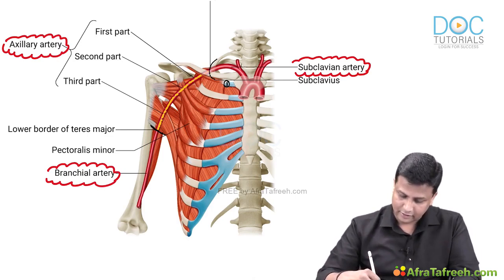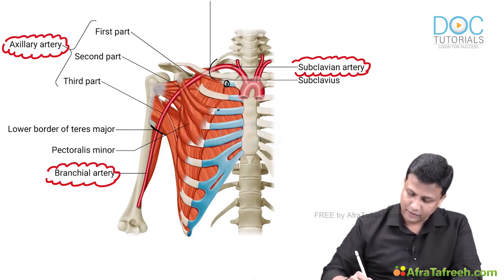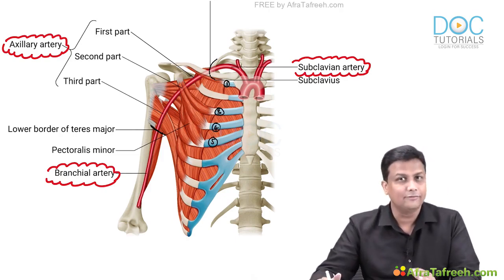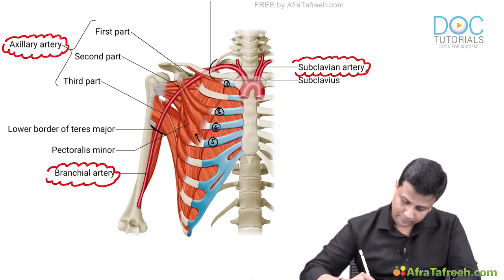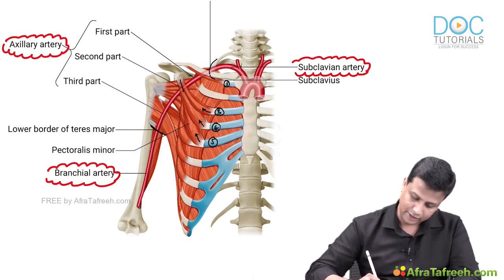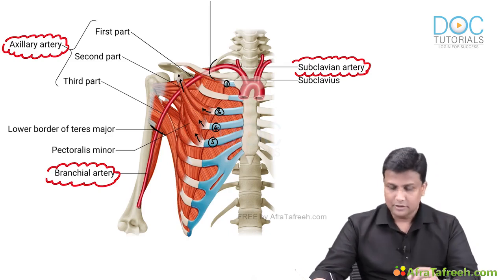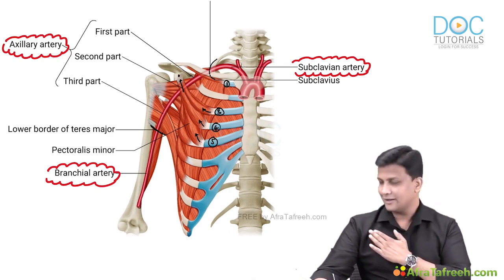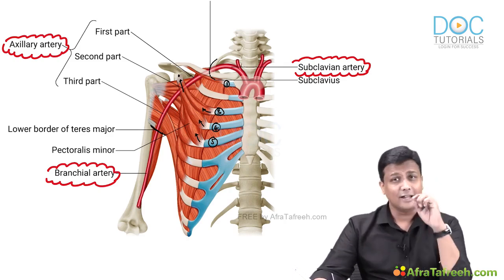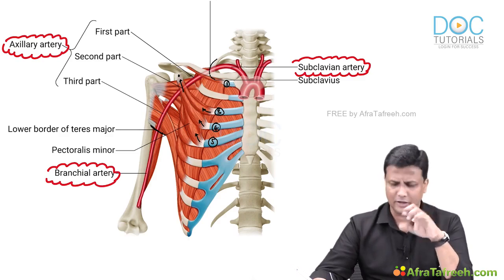The axillary artery is divided into three parts. Looking at the diagram, ribs 3, 4, and 5 are visible, and from there a muscle originates. All three muscle bellies combine and insert onto the coracoid process of the scapula — that is pectoralis minor muscle, originating from ribs 3, 4, and 5 and inserting onto the coracoid process.